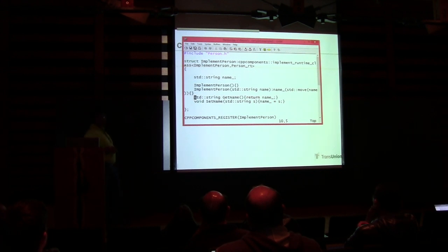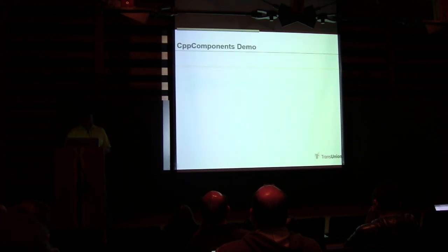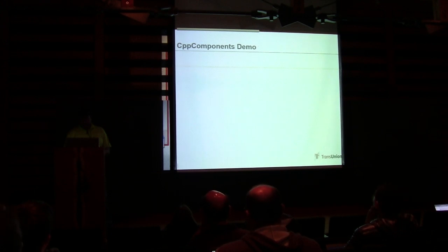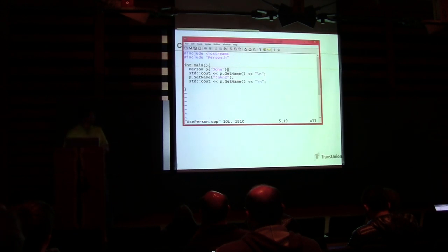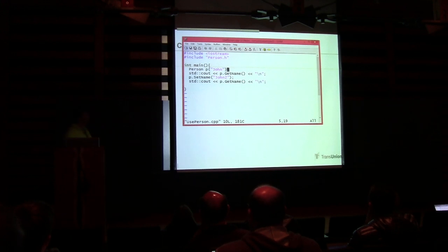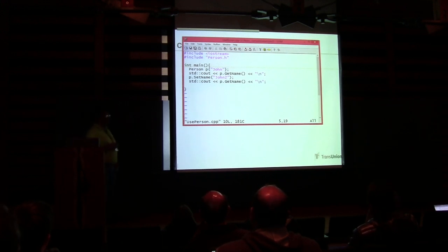The runtime class is saying: these are the interfaces for the object, and these are the constructor interfaces. In our implementation, you just define a constructor — nothing differently. This will map the implementation of that factory interface to the constructor based on the types of the parameters. It prints 'John' and 'John 2'.